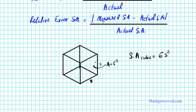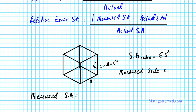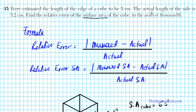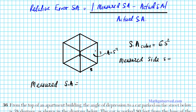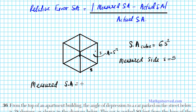Looking at this formula, we have to find the measured surface area first. The measured side length S is what Terry estimated: 5 centimeters. So the measured surface area is 6S², which is 6 times 5 squared. Five times five is 25, times six is 150 centimeters squared.